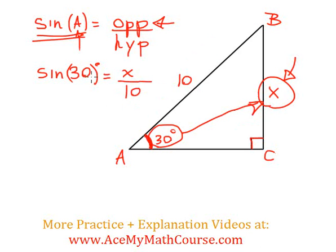Great, so now we know that the sine of 30 degrees is equal to x divided by 10. What I'll do now is plug this into my calculator. If I plug in the sine of 30, I get 0.5.